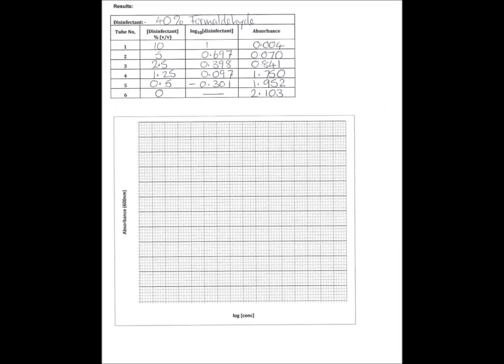So for 0.5%, we have a log to the base 10 value of minus 0.3. With the concentrations for your two disinfectants, some of them will be positive and some of them will be negative.